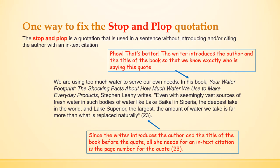One way to fix the stop and plop is to introduce the quote. The writer's first sentence is: 'We are using too much water to serve our own needs.' Then the writer transitions: 'In his book, Your Water Footprint: The Shocking Facts About How Much Water We Use to Make Everyday Products, Stephen Leahy writes,' — using the book title and a signal phrase. Now we know exactly where the quote came from. At the end, only the number 23 appears in parentheses, because the author and title were already introduced. That's an insider move you can use in your writing as well.